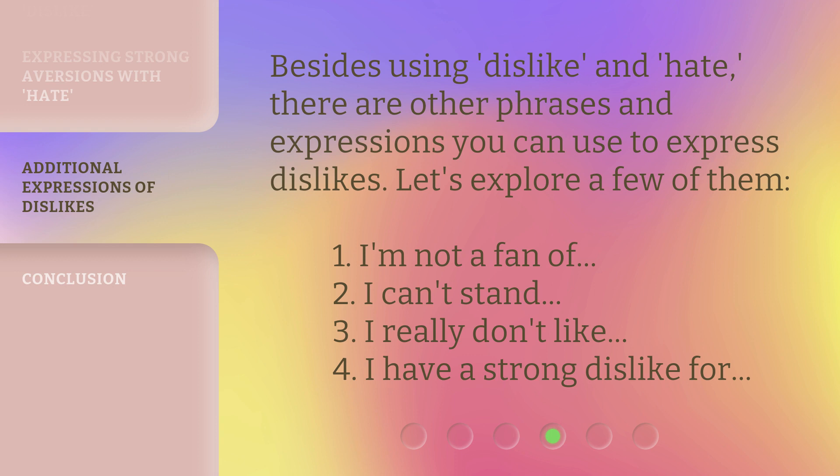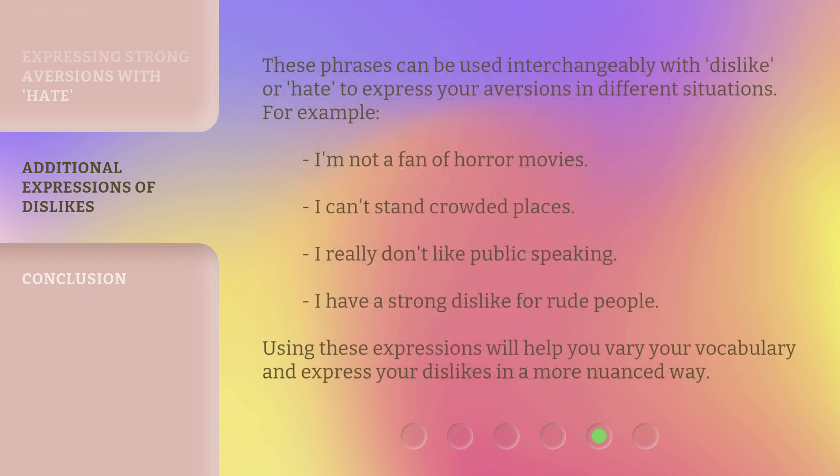I'm not a fan of. I can't stand. I really don't like. I have a strong dislike for. These phrases can be used interchangeably with dislike or hate to express your aversions in different situations. For example: I'm not a fan of horror movies. I can't stand crowded places. I really don't like public speaking. I have a strong dislike for rude people. Using these expressions will help you vary your vocabulary and express your dislikes in a more nuanced way.